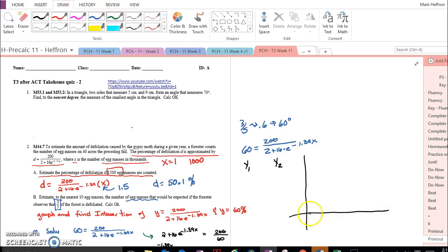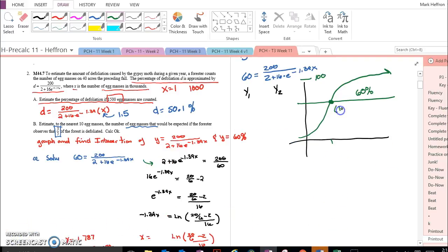The defoliation equation looks like this. Just as you estimate, it levels off at 100%. And when you graph 60%, the intersection is at 1.787, 60. Of course, the 60 represents 60%.